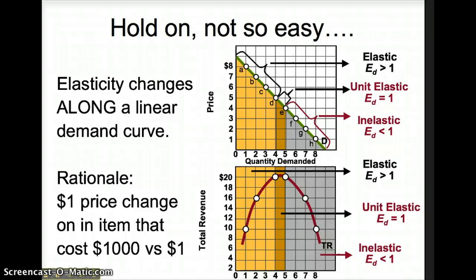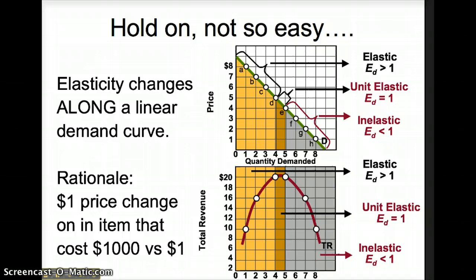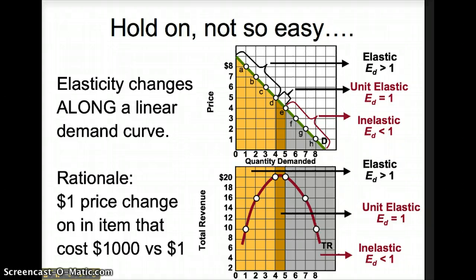You might find it helpful to use the midpoints formula to solve for the coefficients in each of these three sections. The top portion will have a coefficient greater than 1, the middle will have a coefficient equal to 1, and the bottom portion will have a coefficient less than 1.